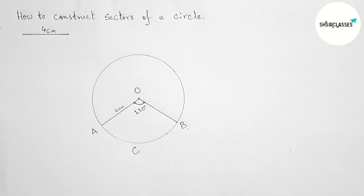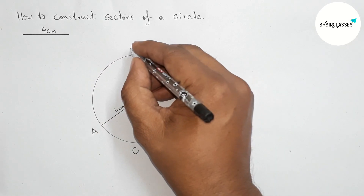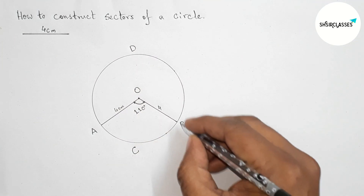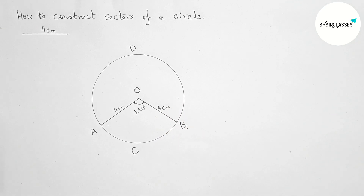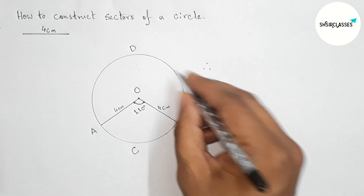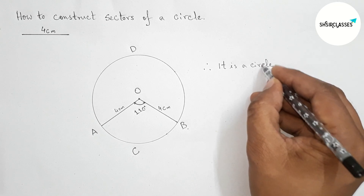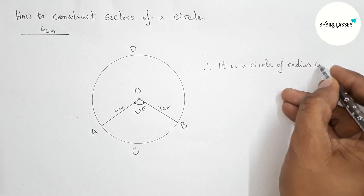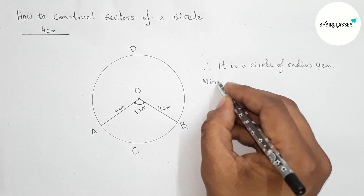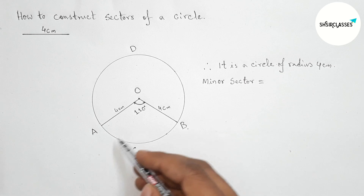Taking point C here — this is an arc of the circle. Taking point D here as well. This is a 4 centimeter radius. Now here we have a perfect circle with radius 4 centimeters.